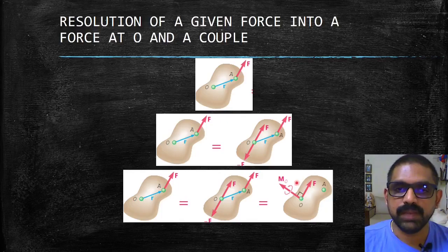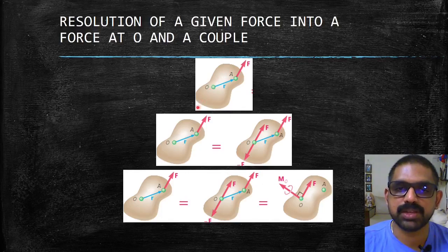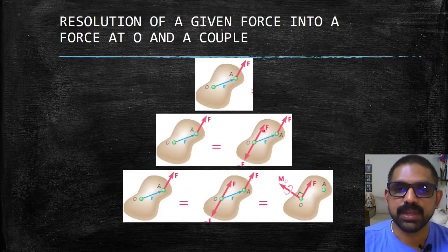In short, we can understand that if a force is applied at some point and I want to shift it to another point in the same rigid body, I would add two forces: one in the same direction and one in the opposite direction. Then the opposite direction force and the original force form a couple, and the remaining force F is the same as what you had applied at point A.